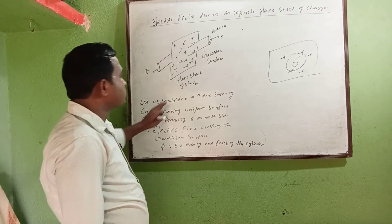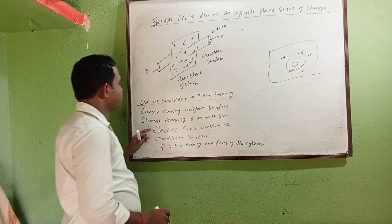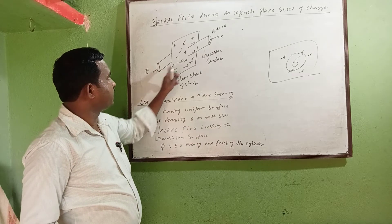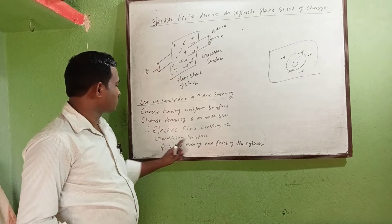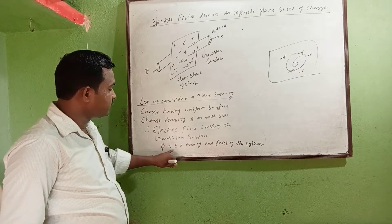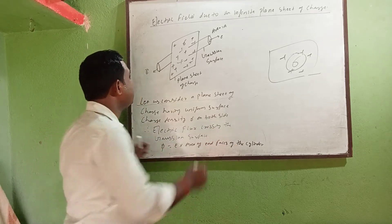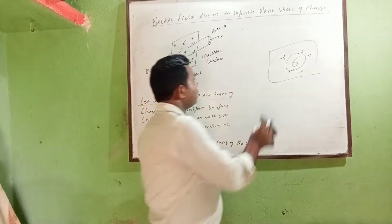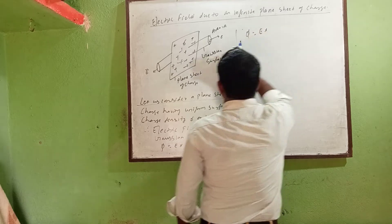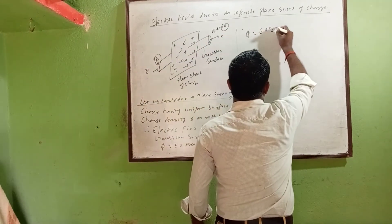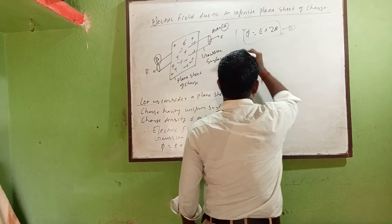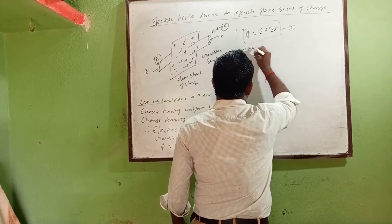Let us consider a plane sheet of charge having uniform surface charge density Sigma. On both sides, the electric flux crossing the Gaussian surface — which is cylindrical in shape — is given by the formula: phi equals E into area. Since both ends of the cylinder have area A, we can write phi equals 2EA. This is equation 1.